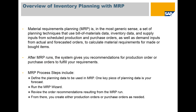So what is MRP? Material requirements planning is the most generic set of planning techniques that use bill of materials process data, inventory data, and supply inputs from scheduled production and purchase orders, as well as demand inputs from actual and forecasted orders to calculate material requirements for make or bought items. After MRP is run, the system gives you a recommendation for production orders or purchase orders to fulfill your requirements.